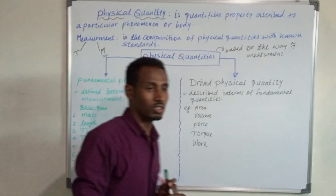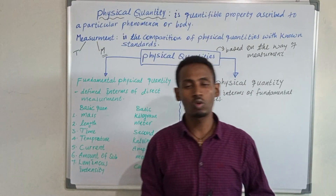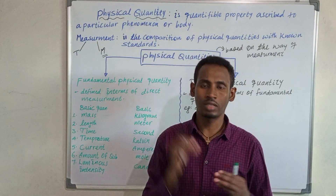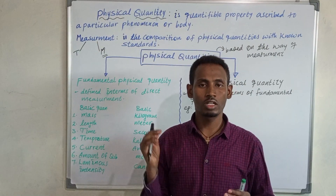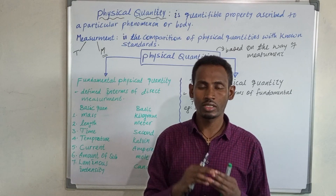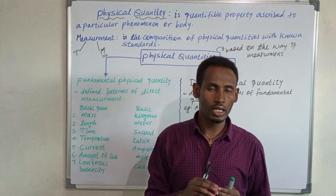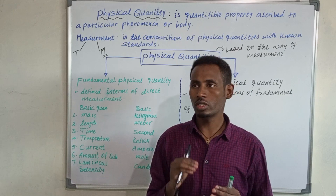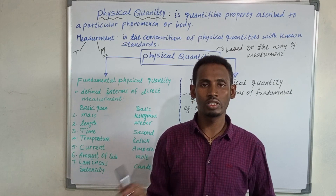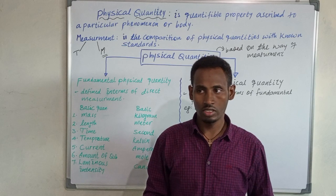The seven fundamental quantities are: first, mass; second, time; third, length; fourth, current; fifth, temperature; sixth, amount of substance; and seventh, luminous intensity.